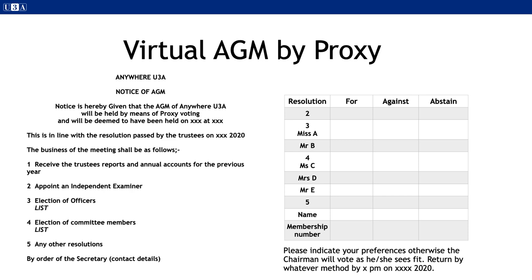Proxies vary from postal votes in that you can choose to vote on your own behalf, or give the option to the chairman or another member to vote as he or she sees fit, or a mixture of both. Whatever means can be interpreted as by hand, by post, or by electronic means, if your members have access to a scanner or a smartphone. Another way would be to send out the notice and voting papers by email, and ask the member to complete and return by email. The disadvantage being that in most cases the form would not be signed.